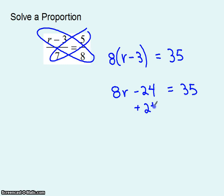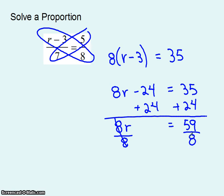35. Adding 24 to each side gets me 8r equals 59 and now dividing by 8 on both sides gets me an answer. That's not going to be a whole number. So I'll just leave it as 59 eighths. If you'd like to write it as a decimal or a mixed fraction knock yourself out.